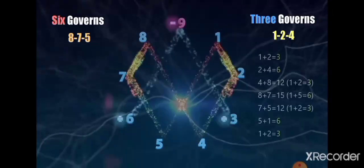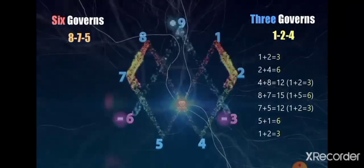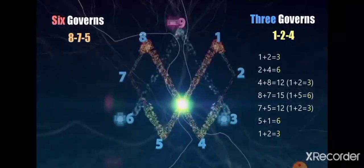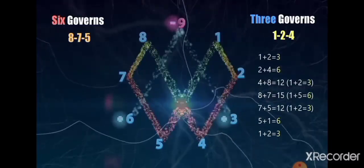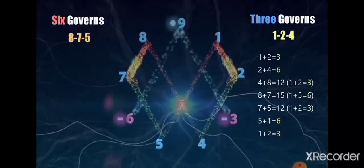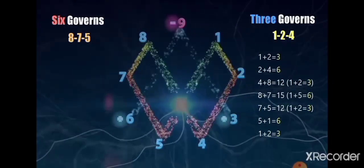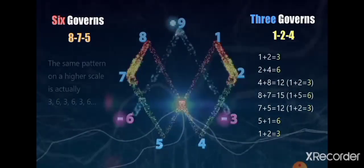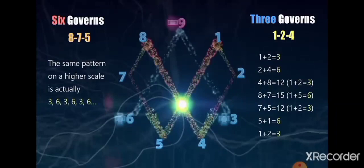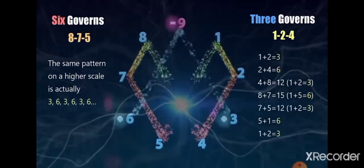1 and 2 equals 3. 2 and 4 equals 6. 4 and 8 equals 12. But 1 plus 2 equals 3. 8 and 7 equals 6. 7 and 5 equals 3. 5 and 1 equals 6. 1 and 2 equals 3. The same pattern on a higher scale is actually 3, 6, 3, 6, 3, 6.